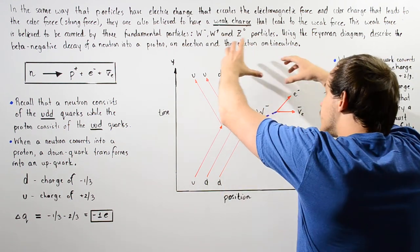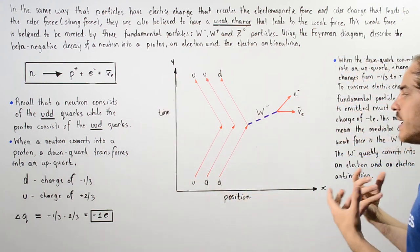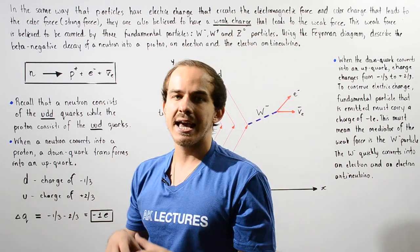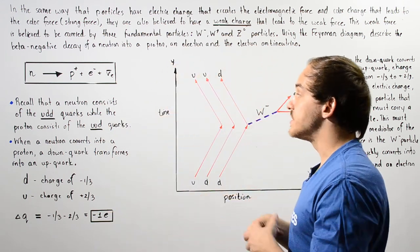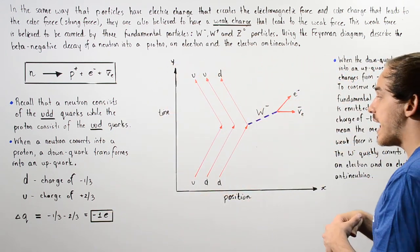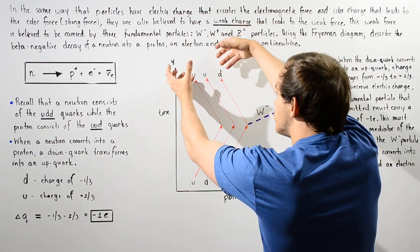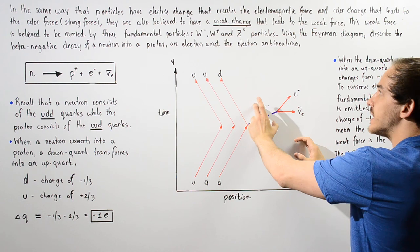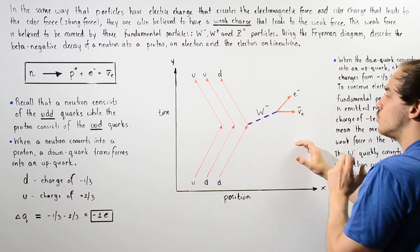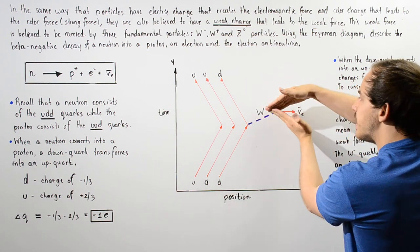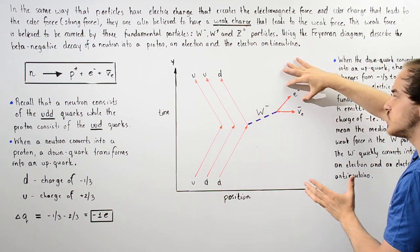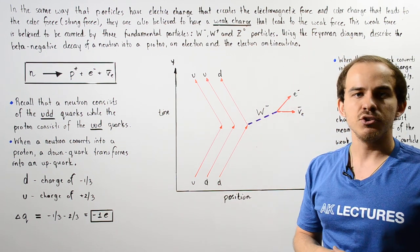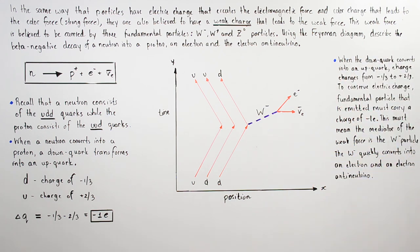This Feynman diagram describes graphically how our beta negative decay actually happens — how it occurs. We have our neutron transforming into the proton, in the process releasing our fundamental particle that carries the weak nuclear force. This then transforms into the electron as well as the electron anti-neutrino.